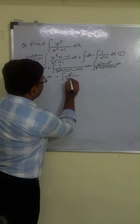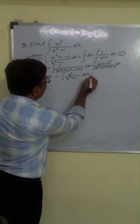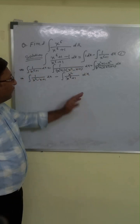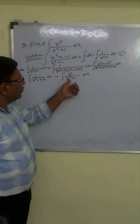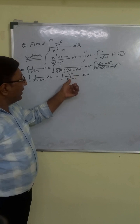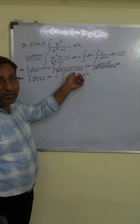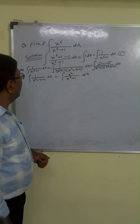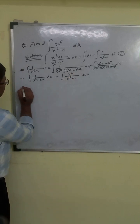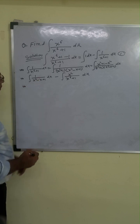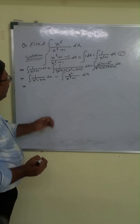Here we have x to the power 6 plus 1 in the denominator, and we can find that integration very easily. Since x⁶ plus 1 is x³ whole squared plus 1, when we put x³ equal to t, the derivative is 3x², which cancels out. Now we focus on 1 upon x⁴ minus x² plus 1 dx.